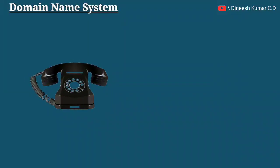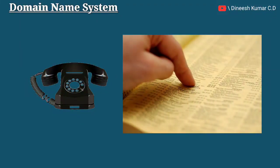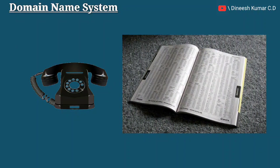We have a phone type. We have a number dial. We have a phone book. We have a number and name. We have a number dial. We are here on our phone when we are connected to the phone book.